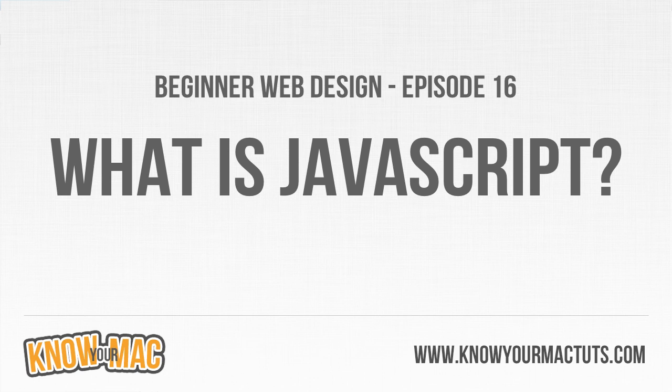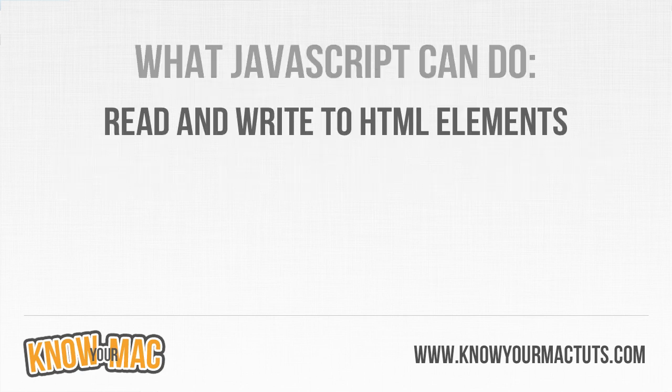The first thing JavaScript can do is read and write to HTML elements. If you have some text in a paragraph tag, JavaScript can go in and look into that element and see what content is inside. Furthermore, it can edit this content based on your visitor to provide a more unique experience for your users.